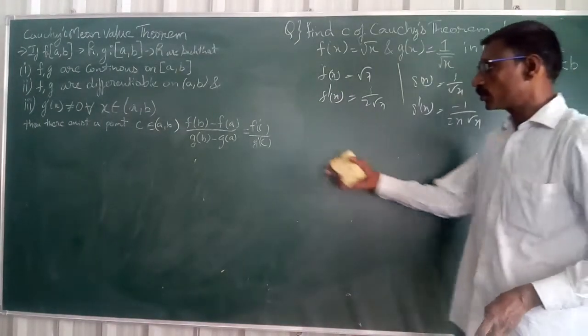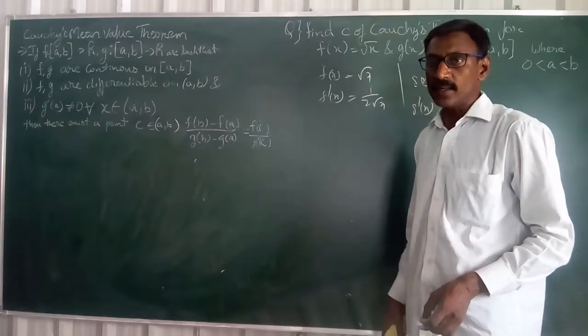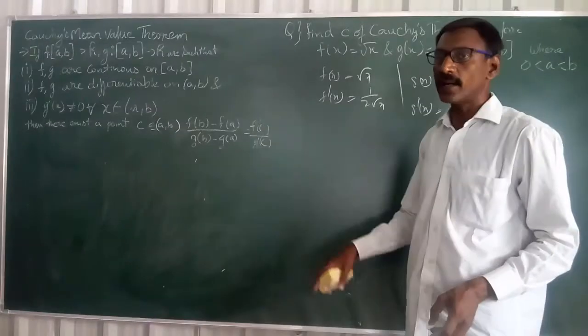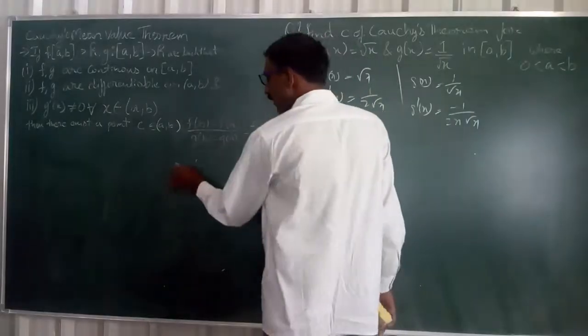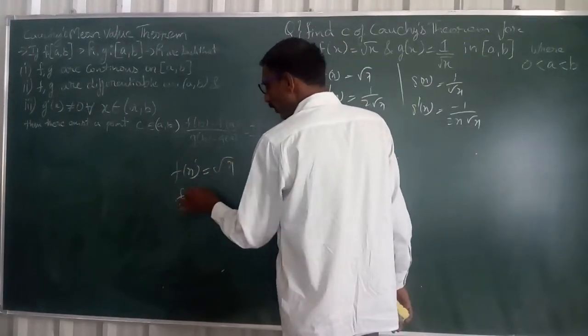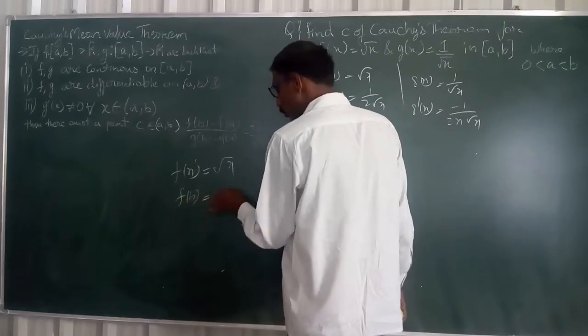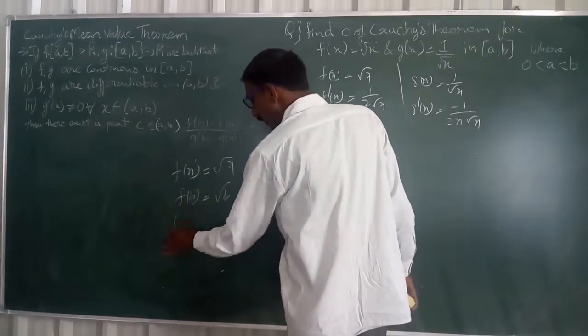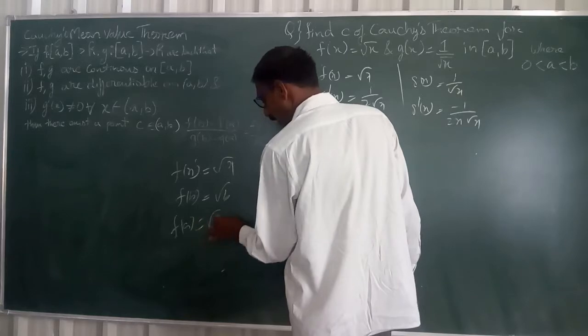Now we have to place the values of f(B), f(A), g(A) and g(B). So we have here f(x) is equal to √x, right? Therefore, f(B) is equal to √B. Similarly, f(A) is equal to √A.